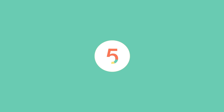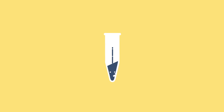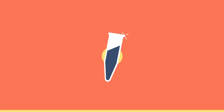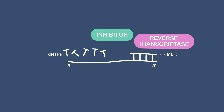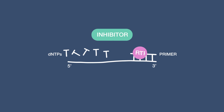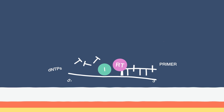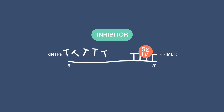Here are the top five reasons for low sensitivity. Reason number one is inhibitors of reverse transcriptase present in the RNA samples. These inhibitors affect enzyme activity and lower the cDNA yield. To overcome this, optimize the RNA isolation step and choose a robust reverse transcriptase that is less sensitive to inhibitors.